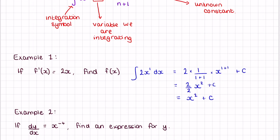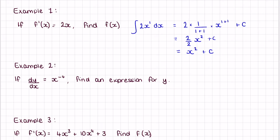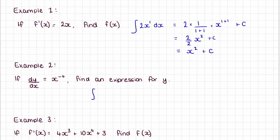Example 2: if dy/dx equals x to the power of negative 4, find an expression for y. We write the integral of x^(-4) dx. There's no number in front, so it will just be 1 over (n+1), which is 1 over (-4+1), multiplied by x to the power of (-4+1), and then plus c.